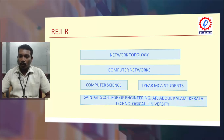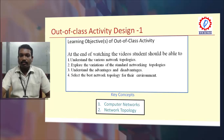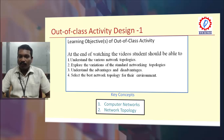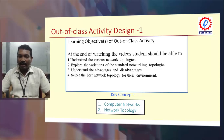Here, we are creating a flipped classroom constructor for the topic of network topology, which comes under the course Computer Networks. It is mainly meant for first-year MCA students of APJ Abdul Kalam Technological University. The major learning objectives are: students will understand various network topologies, explore variations of standard networking topologies, understand their advantages and disadvantages, and be able to select the best network topology for their environment.